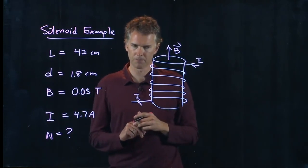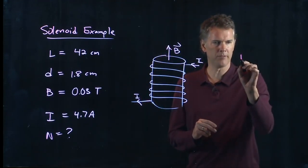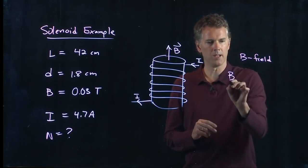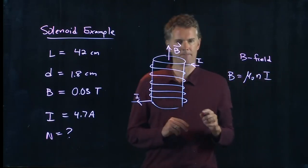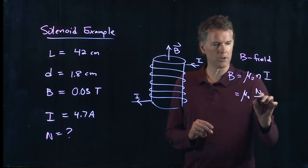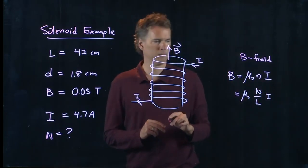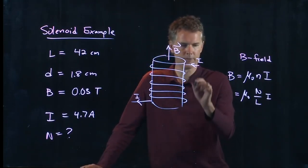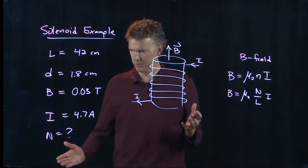We need to figure out what the number of turns is that we need. But we know how to do this - the solenoid has a B field that we said is μ₀ times little n times I, and little n we said is the number of turns per length, how many coils you have in a given length L.